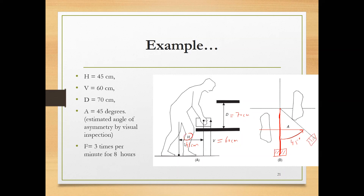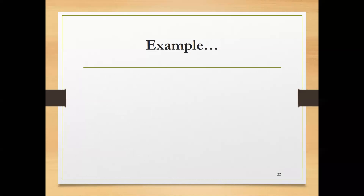We have horizontal distance, vertical distance, D, and A, and we are also given frequency. The only missing information is the coupling value, so we will assume that to be good — good enough to handle this load. We will find the RWL and see if the task is safe or not.